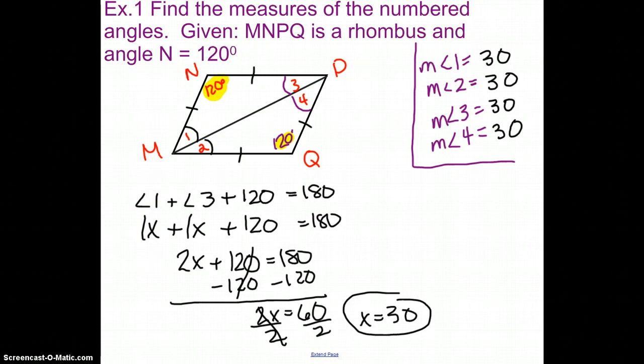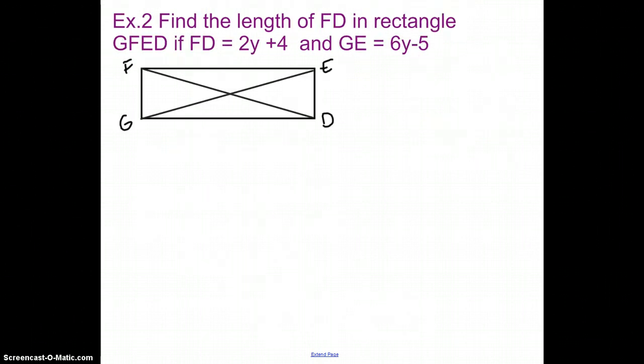Let's see if we can do one more example to show you a little bit of how the parallelograms work, or excuse me, how the diagonals work. So in this kind of a picture, if it's a rectangle, that means that I know that this has to be equal to this. So we know that FD and GE are going to have to be equal. So I'm going to have to go through and solve this.